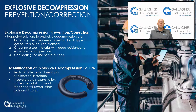How do you identify explosive decompression O-ring failure? The seal subjected to explosive decompression will often exhibit small pits or blisters on its surface. In severe cases, examination of the internal structure of the O-ring will reveal splits and fissures.